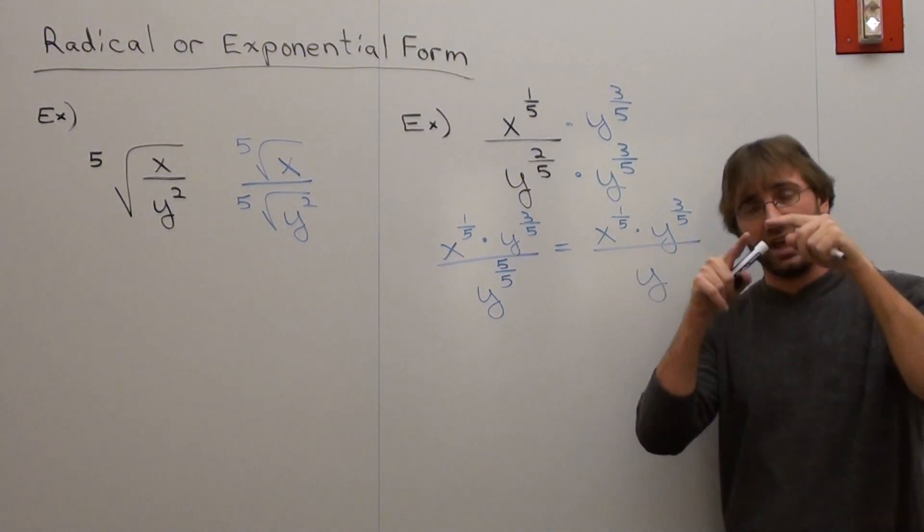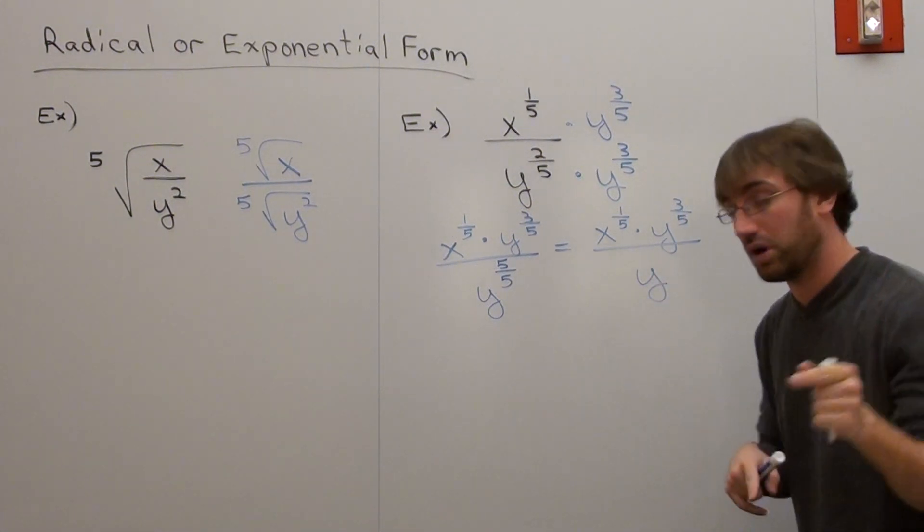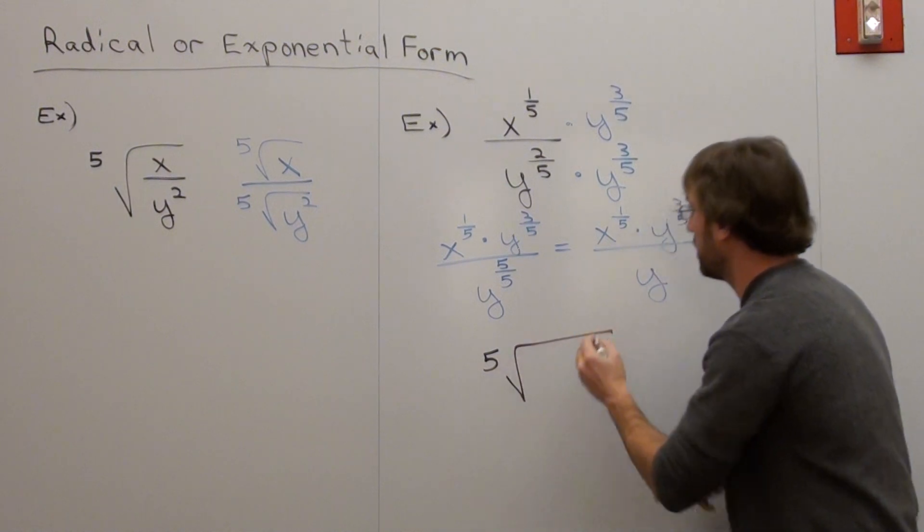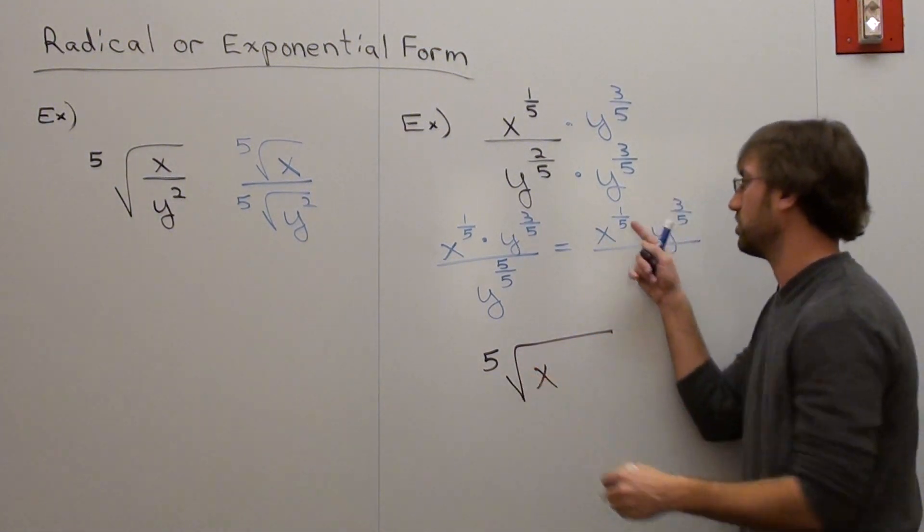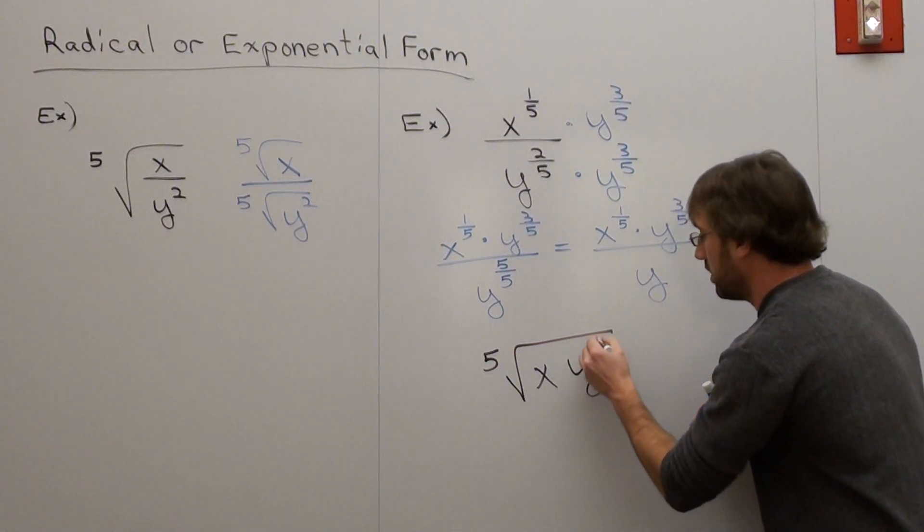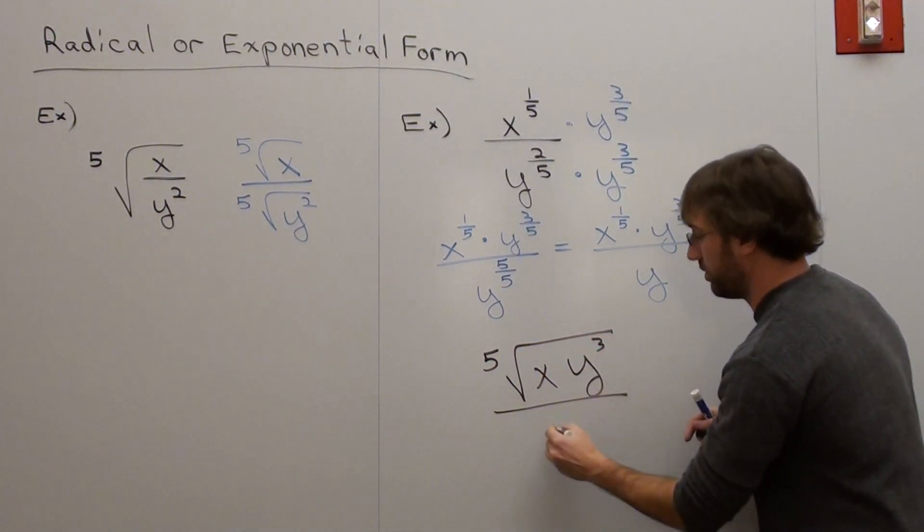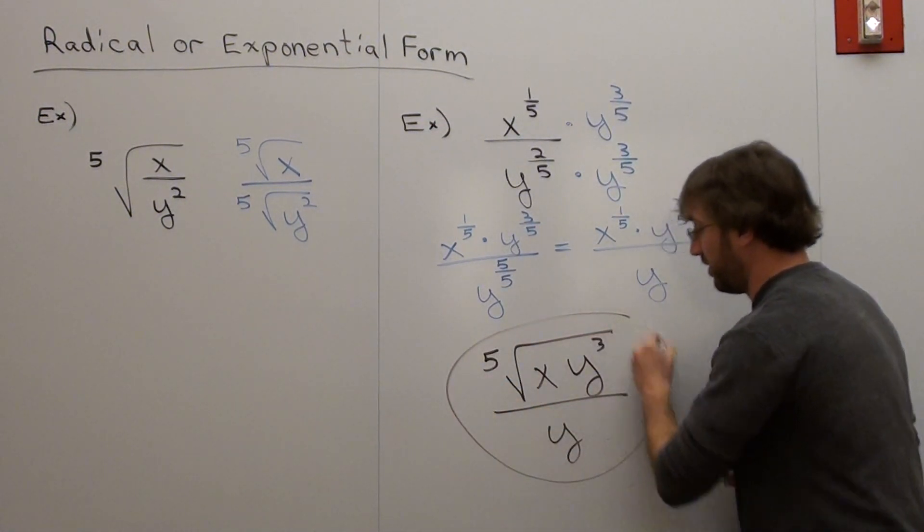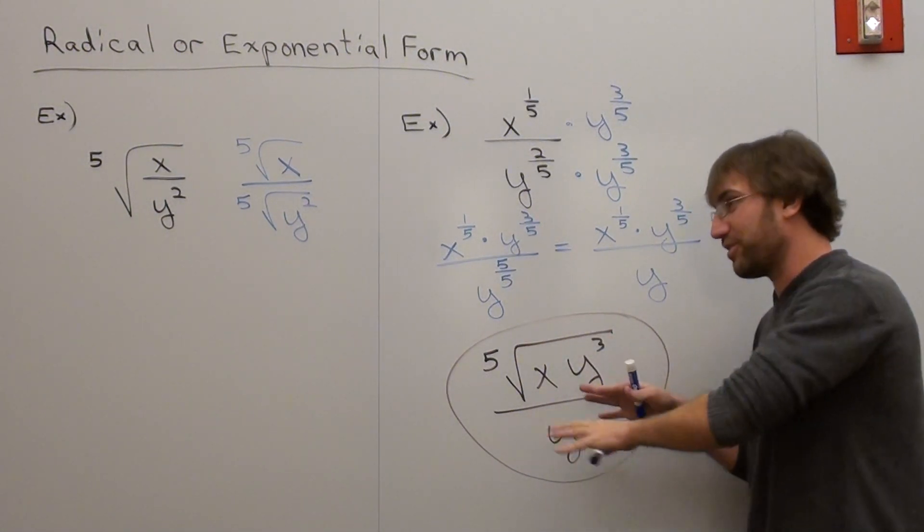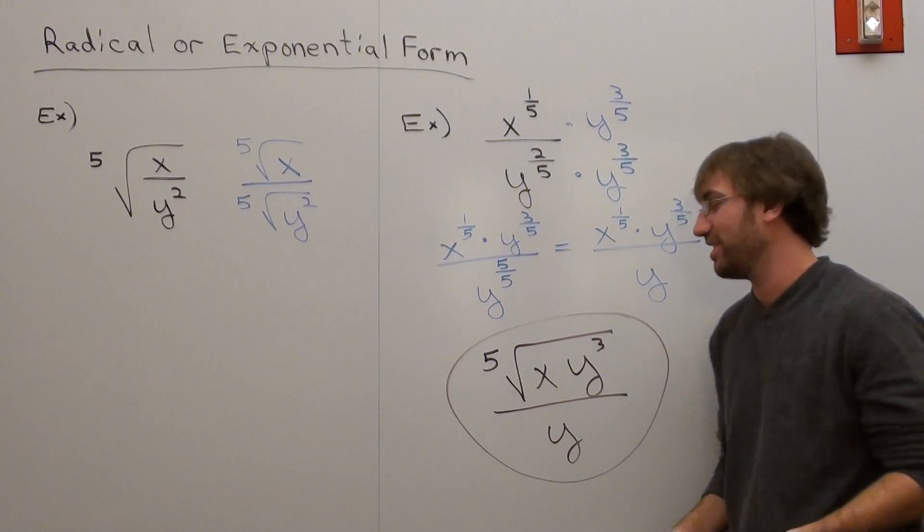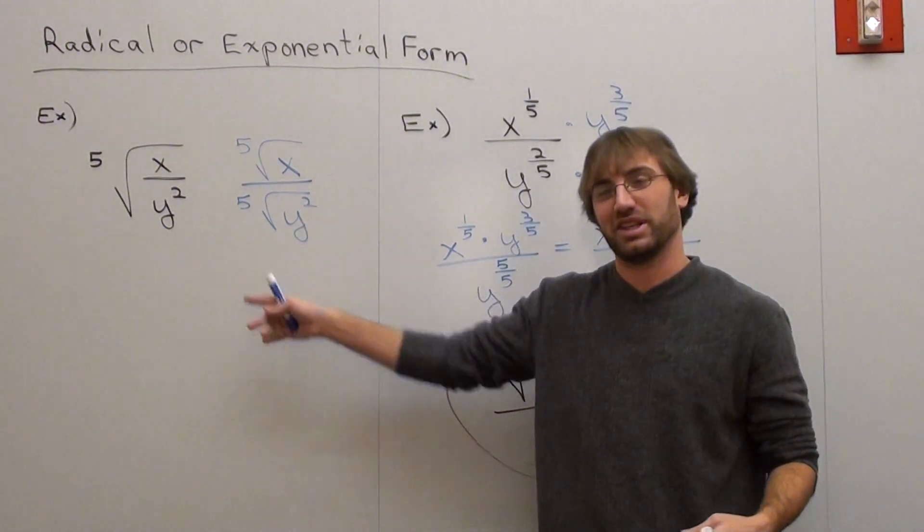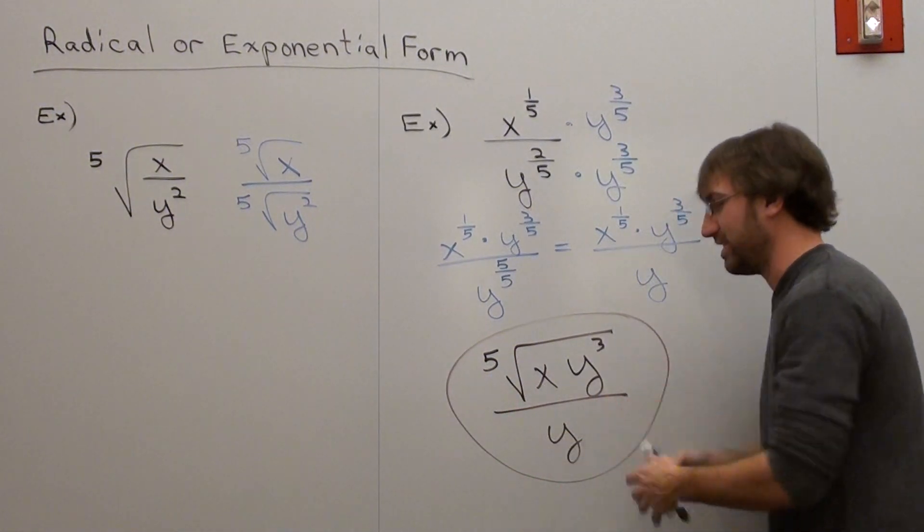Notice that they both have a five in the denominator, which means they're both underneath the fifth root. And it's x to the first, you don't need to put x to the first, you can just put x, and y to the third. And it's all over y. And believe it or not, you actually did simplify it. You got rid of fractional exponents in the denominator. Some people look at this and they say, this is garbage. I mean, I like it better when it looks like this. Yeah, yeah, yeah. But that's how you simplify it.